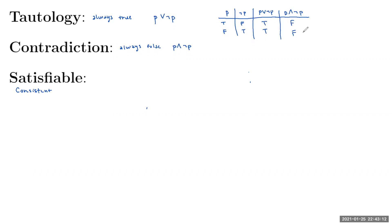Finally, we have satisfiable, or consistent. This is a compound proposition where some assignment of truth values makes the proposition true. Note that a tautology, because it's always true, is also always satisfiable.